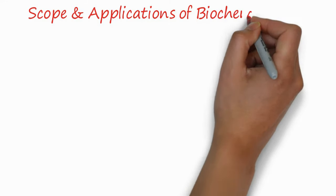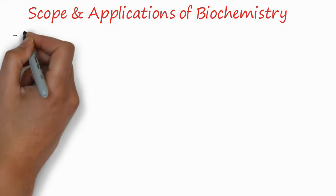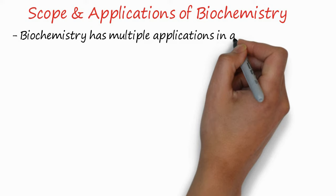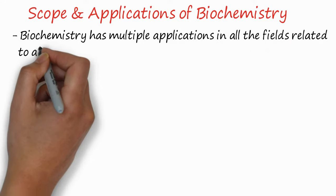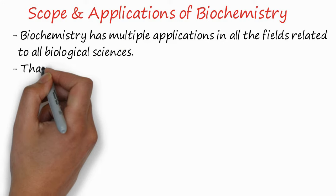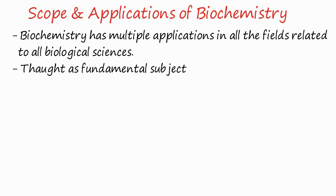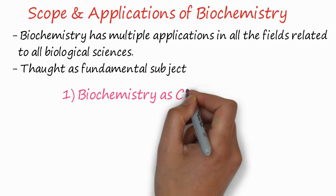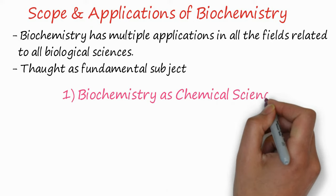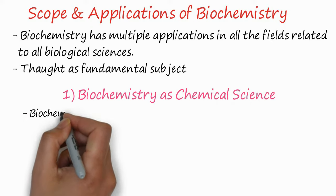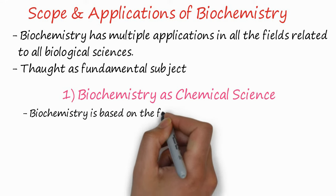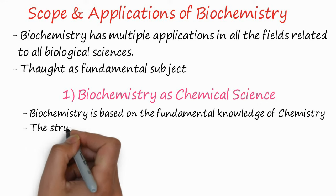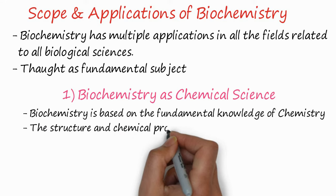Now, scope and implications of biochemistry. Biochemistry has multiple implications in all fields related to biological sciences. This subject is a fundamental subject in the majority of biological sciences. For example, biochemistry is a chemical science — it is based on the fundamental knowledge of chemistry: the structure and chemical properties of biomolecules.